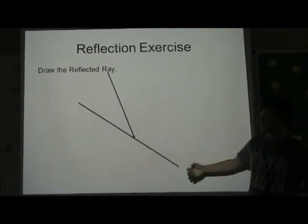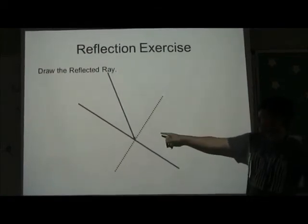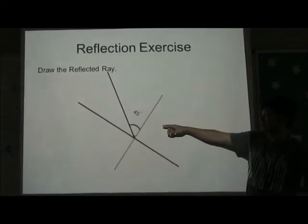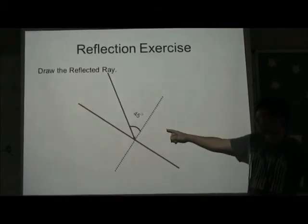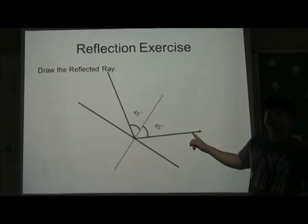So we just follow the same four steps. Step one, draw the normal, that is right angle. Next, measure the angle of incidence, 45 degrees. Draw the angle of reflection, 45 degrees as well, and draw the reflected ray.